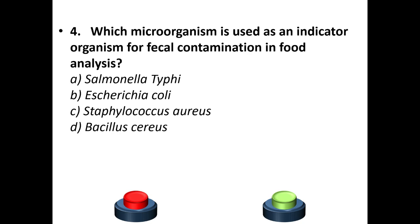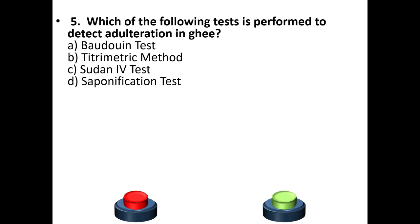Fourth question: Which microorganism is used as an indicator organism for fecal contamination in food analysis? Options: Salmonella typhi, E. coli, Staphylococcus aureus, Bacillus cereus. The common example is option B: E. coli.